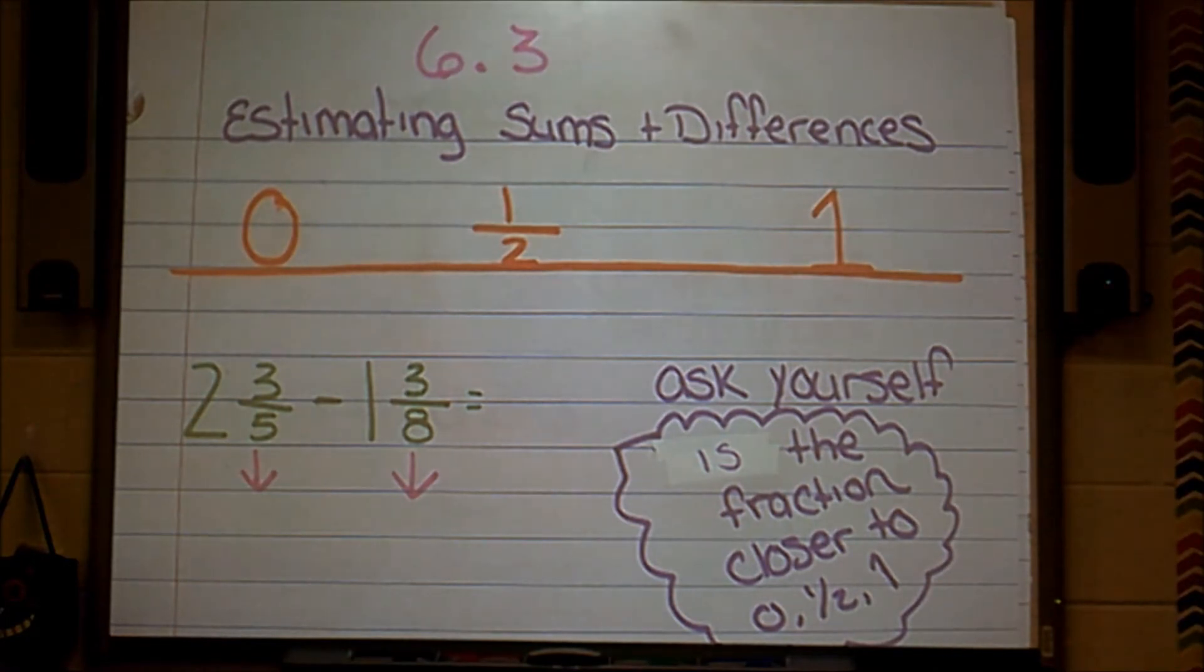Where would I find that 3 fifths on my number line? Would it be closer to the 0? Would it be closer to the 1 half? Or would it be closer to the 3 eighths? Now for this you're going to have to use your visualizing skills. You could draw a picture if you wanted to and see if that helps you. And that's what I'm going to do now. I'm going to use a picture.